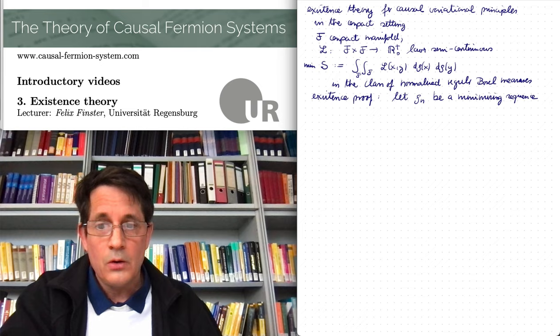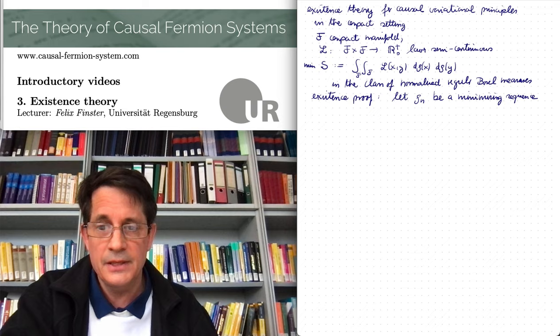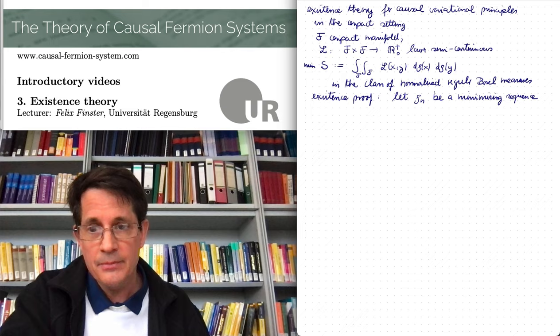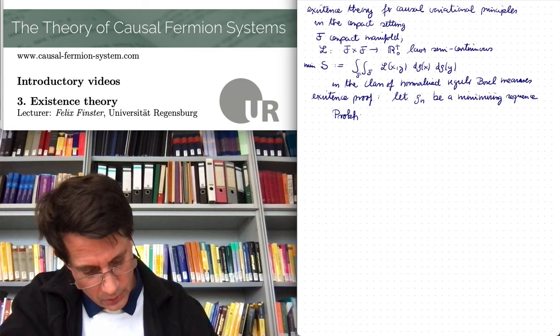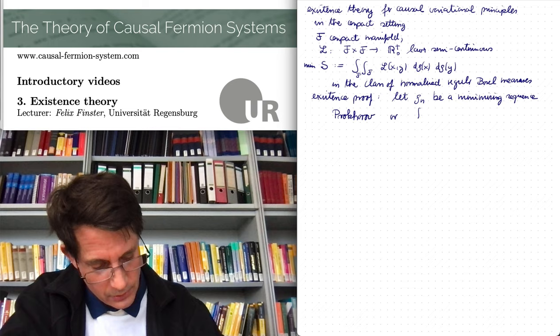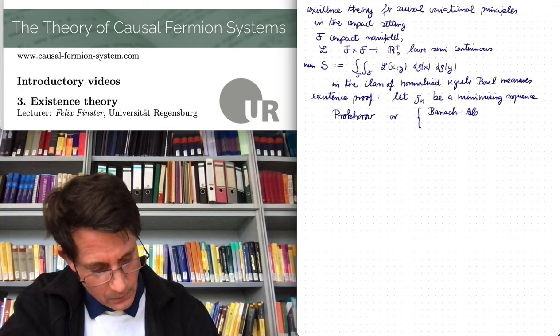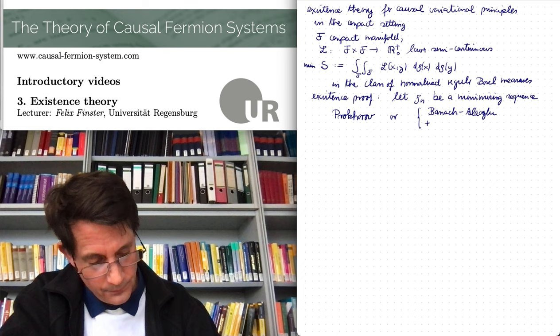And then the difficulty is always to construct a convergent subsequence, so we need some kind of compactness. And here the compactness comes from Prokhorov's theorem. So one can use either Prokhorov or maybe a bit less sophisticated, one can also use the Banach-Alaoglu theorem and the Riesz representation theorem.